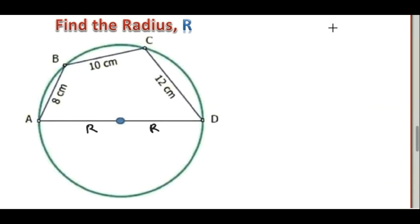You've been told to find the radius R of the circle. If you have the angle at D to be angle alpha, then the angle at B will be 180 minus alpha, because opposite angles of a cyclic quadrilateral add up to 180 degrees.